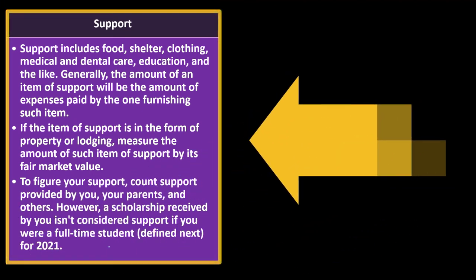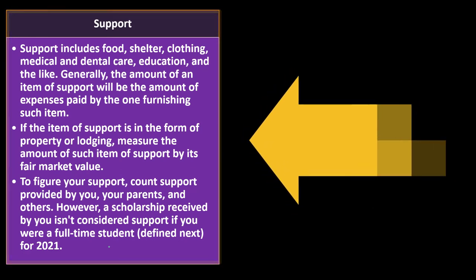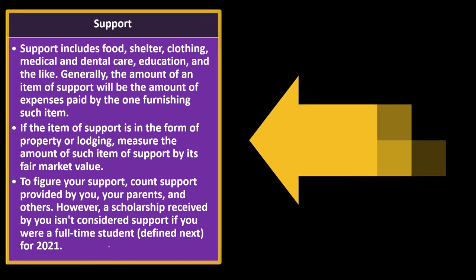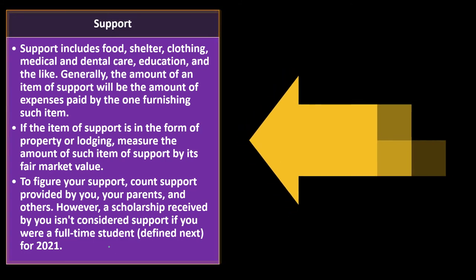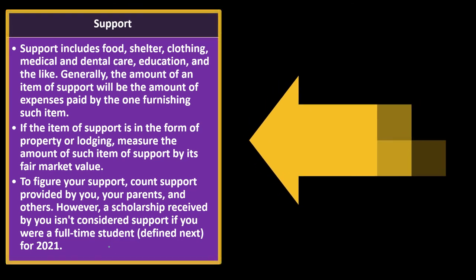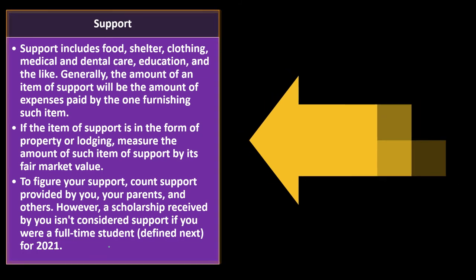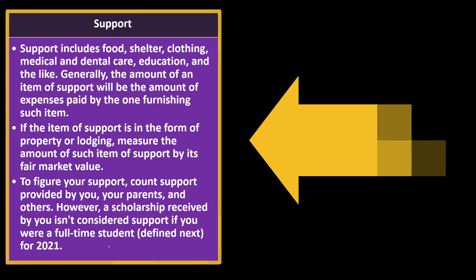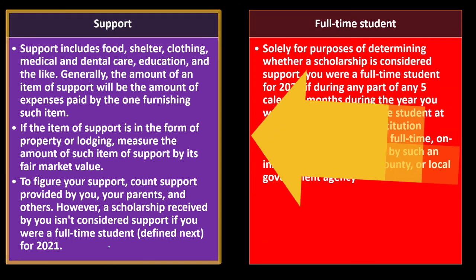Support includes food, shelter, clothing, medical and dental care, education, and the like. Generally, the amount of an item of support is the amount of expenses paid by the person furnishing it. If support is in the form of property or lodging, measure it by fair market value. To figure your support, count support provided by you, your parents, and others. However, a scholarship received by you is not considered support if you were a full-time student for 2021.